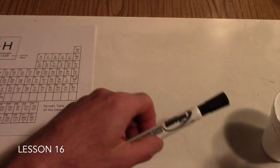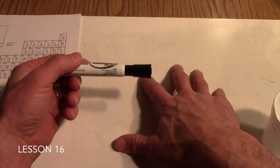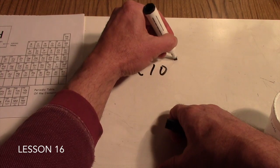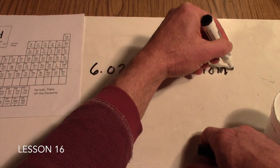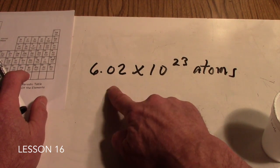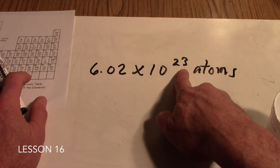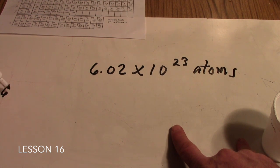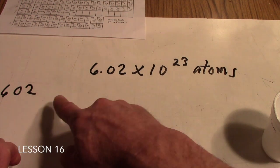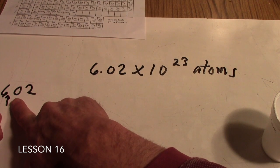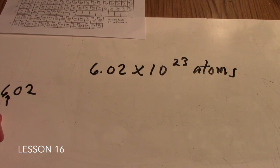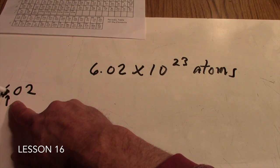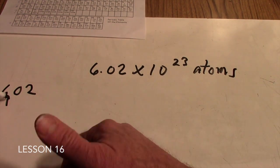On your board — whether it's a chalkboard, dry erase board, or flip chart — let's write down Avogadro's number. It's 6.02 times 10 to the 23rd. Those are atoms. Now, some students may not be familiar with scientific notation, so go ahead and write that out longhand. When we say 10 to the 23rd, we have to count 23 places out to the right from the decimal point.